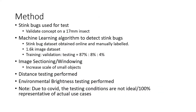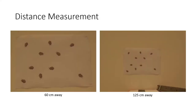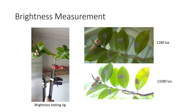The distance testing performed involved the system being moved further and further away from the scene and determining its effect on the machine learning algorithm's accuracy. And lastly, the brightness testing was performed by mounting the camera under a broken-off branch and moving it to areas of differing light levels.